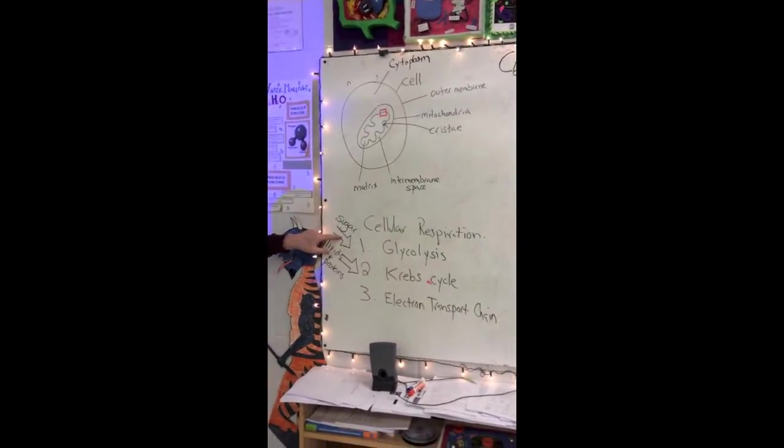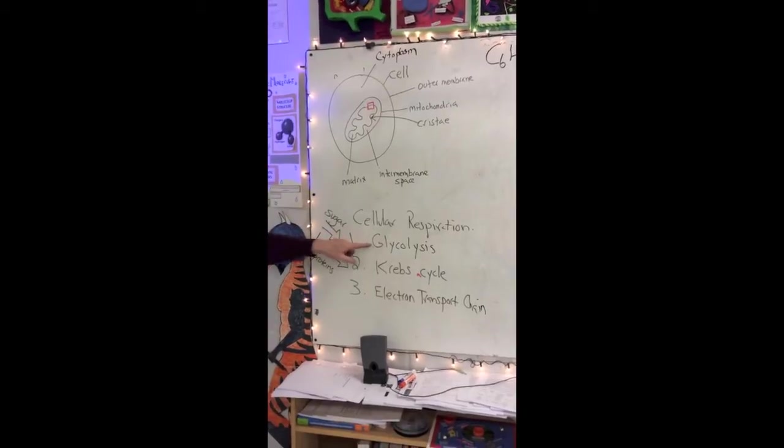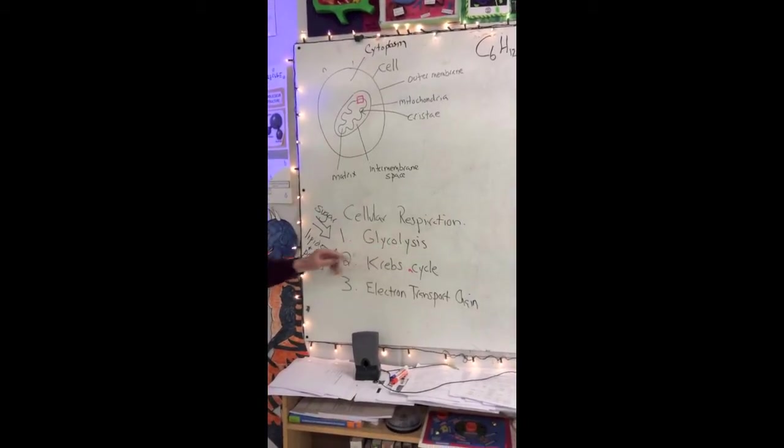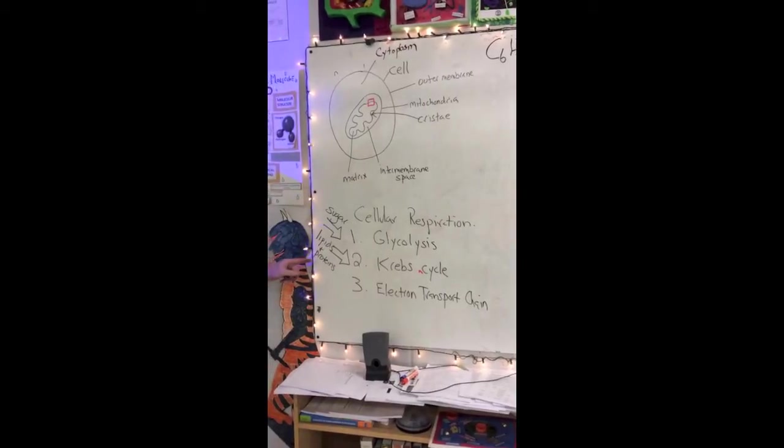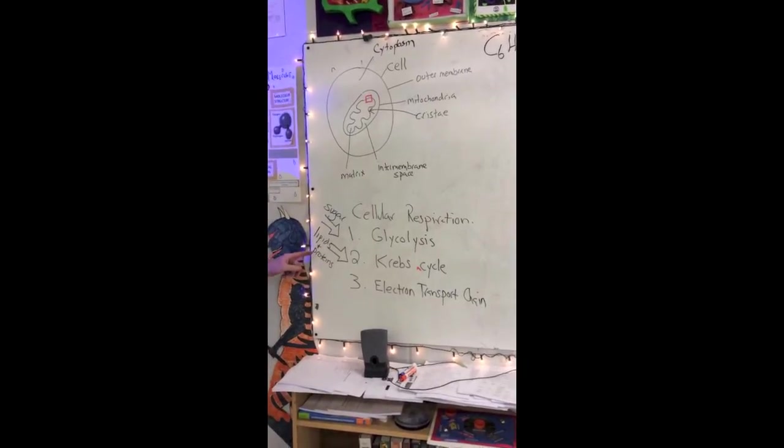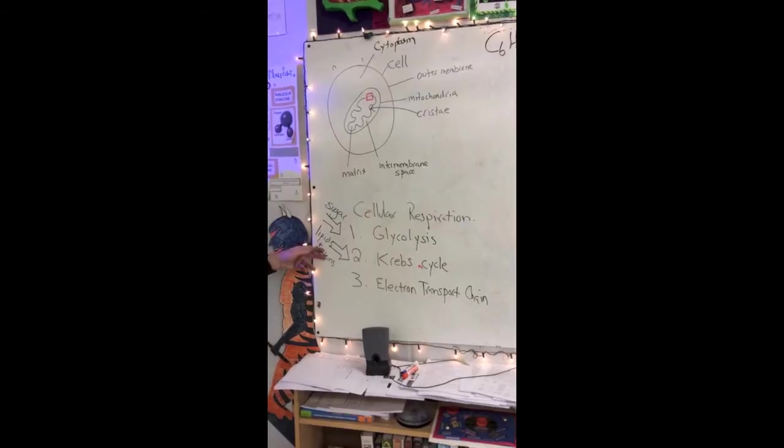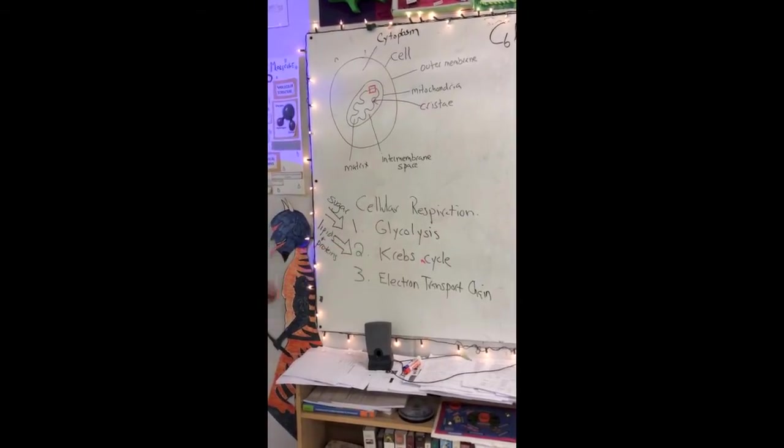Sugar enters into cellular respiration in glycolysis. In fact, glycolysis literally means splitting sugar. Lipids and proteins, however, can also be used for food, for fuel, and they enter the process of cellular respiration through the Krebs cycle.